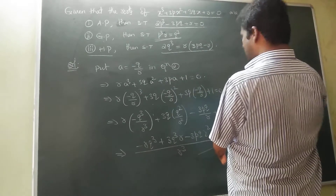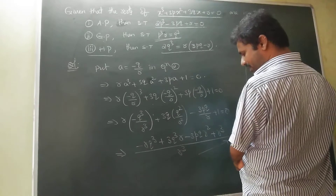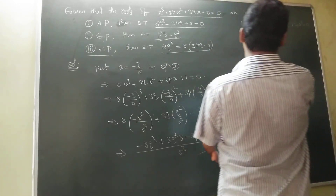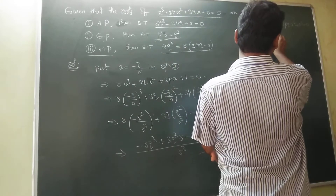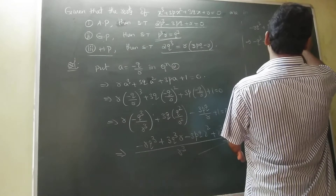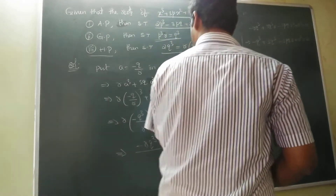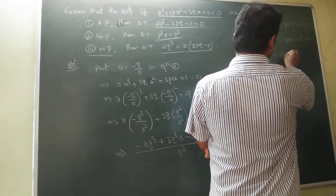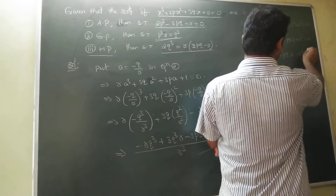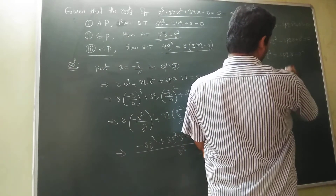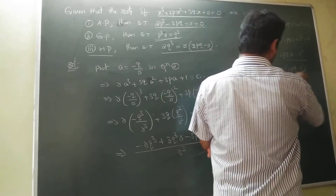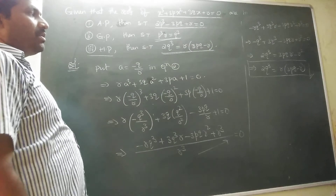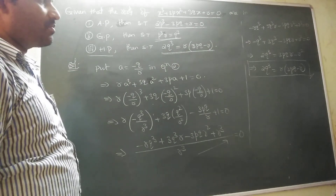Simplifying: minus Q³ plus 3Q³ minus 3PQR plus R² equal to 0, which gives 2Q³ minus 3PQR plus R² equal to 0. So the condition for the roots to be in HP is: 2Q³ equal to R times (3PQ minus R). This is the answer.